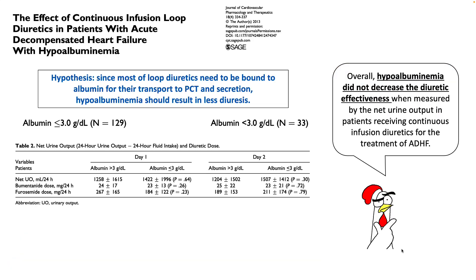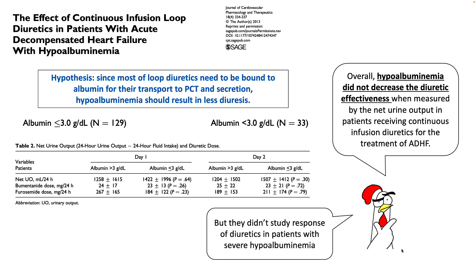Does hypoalbuminemia affect your diuretic action? This article studied the effectiveness of diuresis in patients with hypoalbuminemia, comparing albumin greater than 3 versus less than 3, and did not find any difference in the amount of diuresis with similar amounts of bumetanide or furosemide. However, they did not study response to diuretics in patients with severe hypoalbuminemia, which can be a critique of the study.